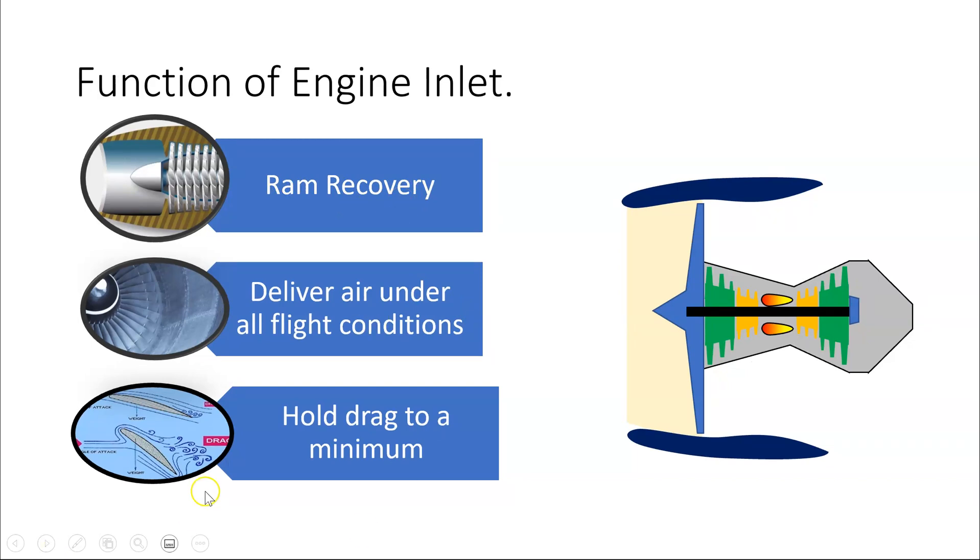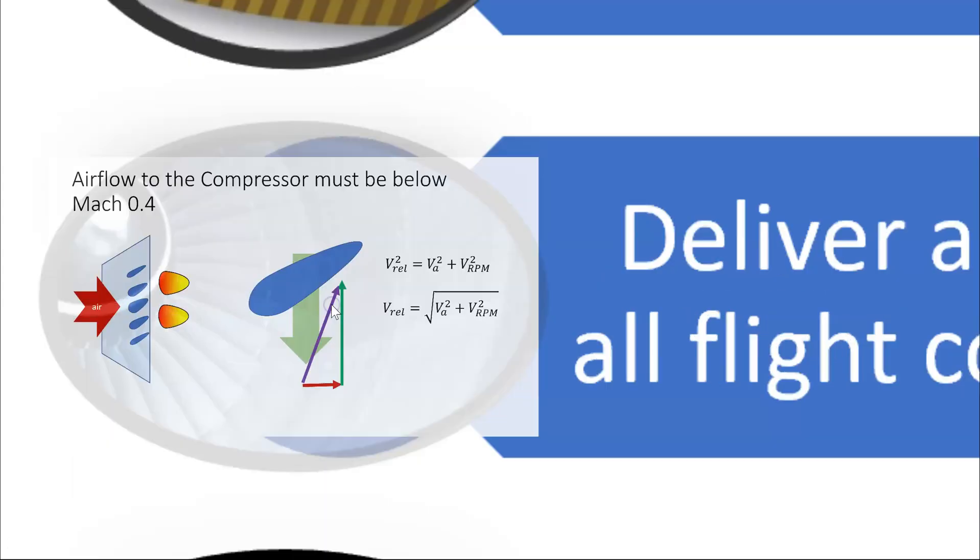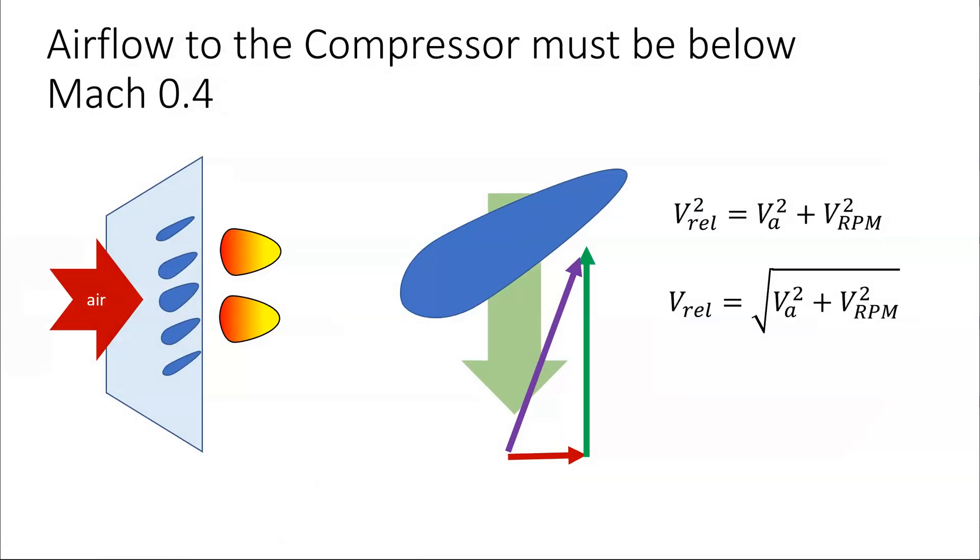Okay, so that's ram recovery. The second point is to deliver air under all flight conditions. So when the air comes in through the inlet, it eventually comes and meets the compressor, or the fan.